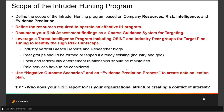Next, we need to look at the scope of the program, which is based on four key elements: company resources, risk intelligence, and evidence prediction. You need to define the resources required to operate an effective intruder hunting program, document your risk assessment findings — that's your course guidance system for targeting the huntscape — and then find out which systems you're going to look at.